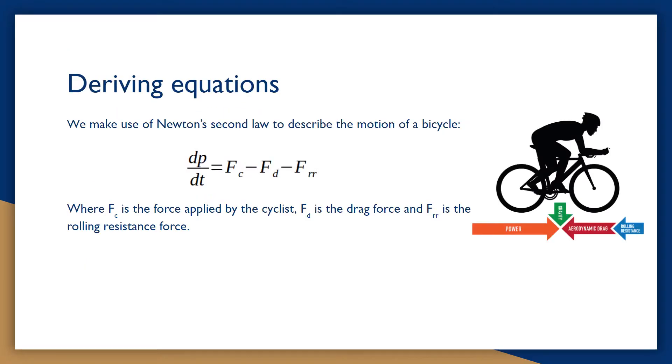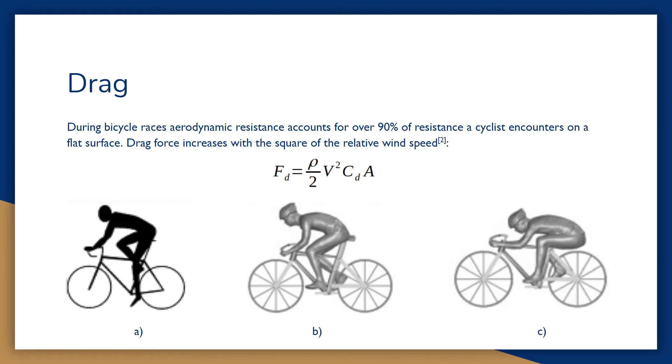We make use of Newton's second law to describe the motion of a bicycle. dp/dt equals Fc minus Fd minus Frr, where Fc is the force supplied by the cyclist, Fd is the drag force, and Frr is the rolling resistance force. During bicycle races, aerodynamic resistance accounts for over 90% of resistance a cyclist encounters on a flat surface. Drag force increases with the square of the relative wind speed. Drag force also increases with the cross-sectional area.